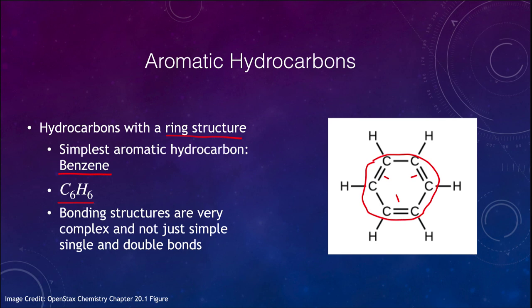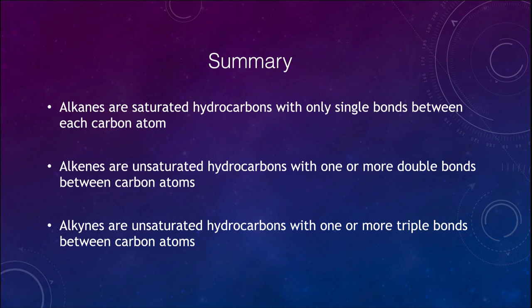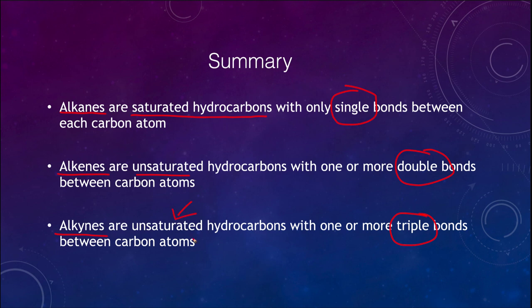To summarize, we looked at three different types of hydrocarbons: alkanes, which are saturated hydrocarbons with only single bonds; alkenes, which are unsaturated hydrocarbons with at least one double bond; and alkynes, which are also unsaturated hydrocarbons with at least one triple bond. That concludes this lecture on hydrocarbons. We'll be back again next time for another topic in physical science — have a great day, everyone, and I will see you in class.